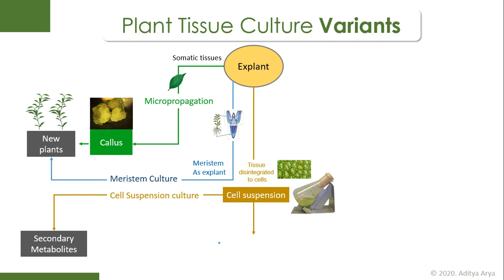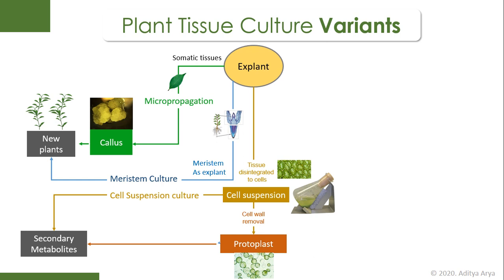In yet another technology, disintegrated cells can further be treated with enzymes to remove the cell wall. Since plant cell walls are mostly made up of pectin, we can use enzymes like pectinases to remove the cell wall and soften the cells. A plant cell without a cell wall is called a protoplast. Protoplasts can be used similarly to cell suspension culture for producing secondary metabolites, scaled up in bioreactors for large-scale production, and also manipulated via genetic engineering. This technique is known as protoplast culture.